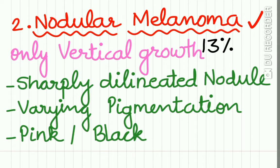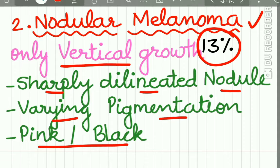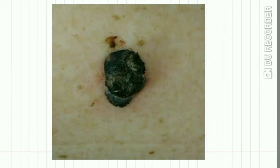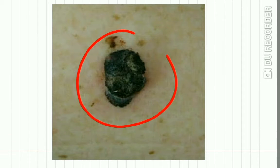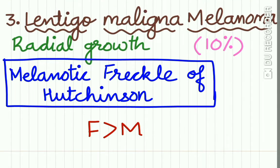Nodular melanoma accounts for 13% of lesions and shows only vertical growth. It appears clinically as a sharply delineated nodule showing varying pigmentation from pink to black. Here is a classical case of nodular melanoma.